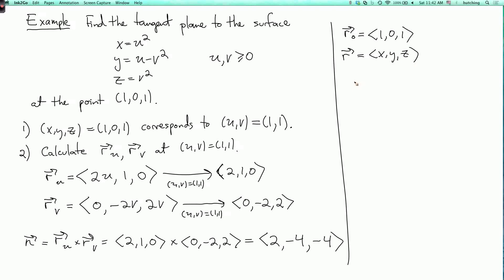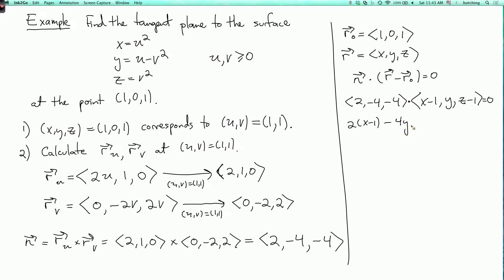Then we can write down the tangent plane. The point r_zero is (1, 0, 1), and the general point is r equals (x, y, z). The equation n dot (r minus r_zero) equals zero expands as (2, minus 4, minus 4) dot (x minus 1, y, z minus 1) equals zero, giving 2(x minus 1) minus 4y minus 4(z minus 1) equals 0, which simplifies to 2x minus 4y minus 4z equals minus 2.